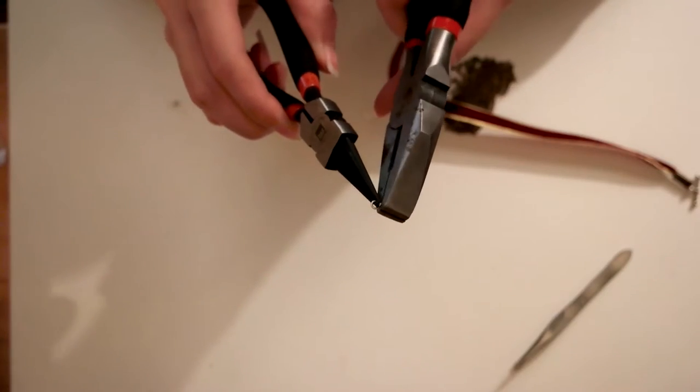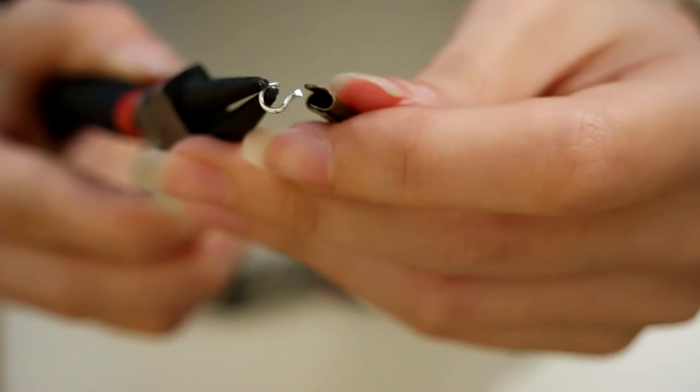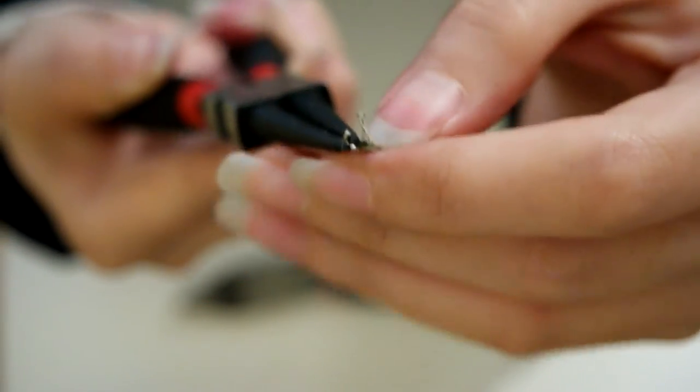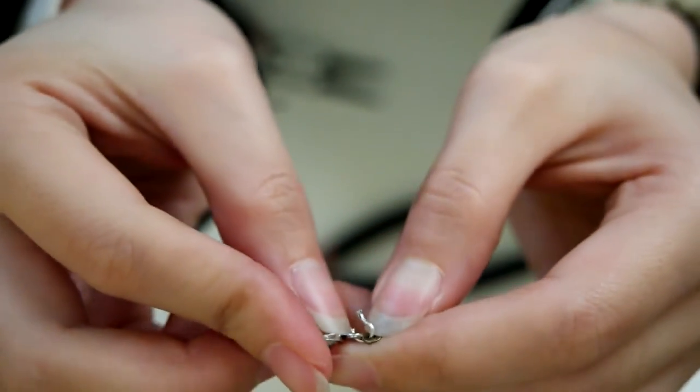For the jump rings, I'm using it to connect the ribbon end that has the crimping clasp on them to the toggle clasp. Now I would prefer using the lobster claw clasp than the toggle clasp, but I didn't have any on hand.